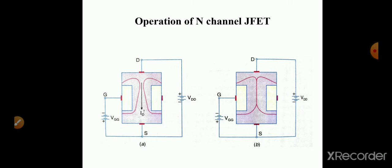The operation of an N-channel JFET. Here, N-channel means the channel is of N-type semiconductor and its gate is made up of P-type semiconductor. For a JFET, its gate terminal or P-regions are heavily doped and the N-type channel is lightly doped compared to the P-type regions.